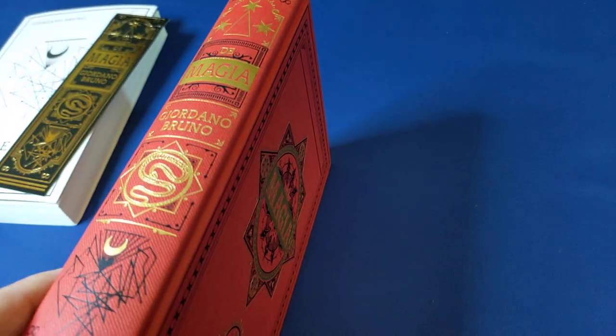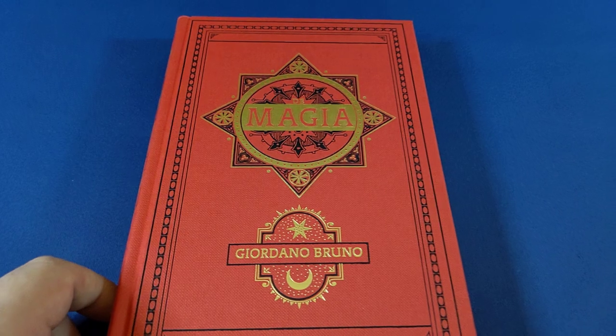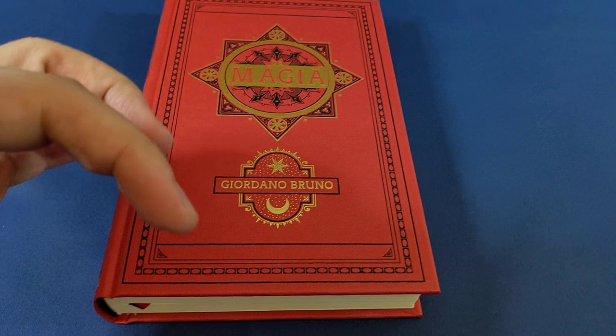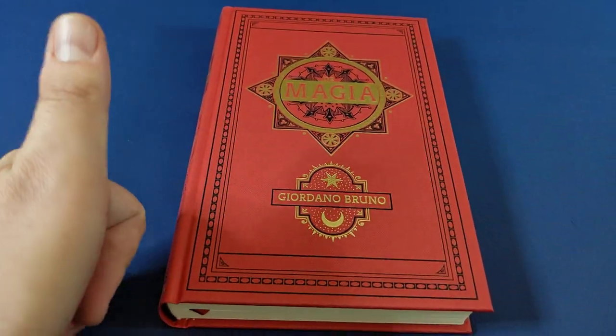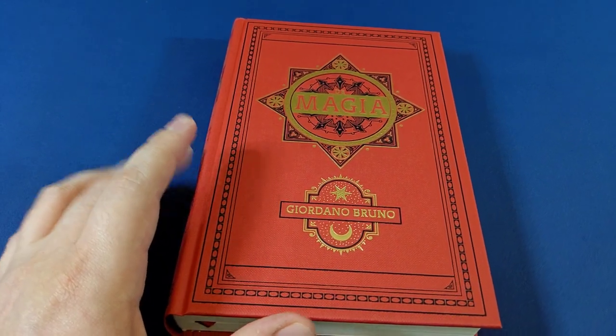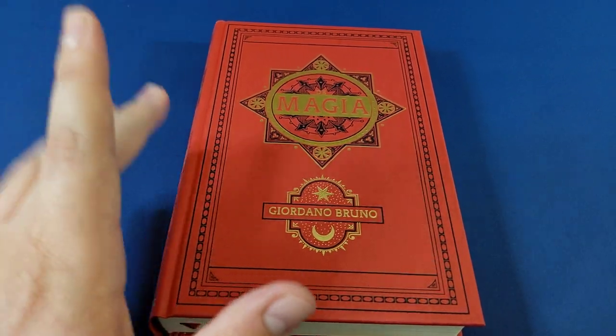The cover itself is textured paper, but it's feeling more and more like actual fabric. That's really very impressive. There we are, De Magia by Giordano Bruno. Go check it out on Black Letter Press's website, links down below. As always, don't forget to leave a thumbs up if you enjoyed the video, subscribe down below if you haven't done so already, and I'll see you very soon with another video. Take care of yourselves, bye bye.